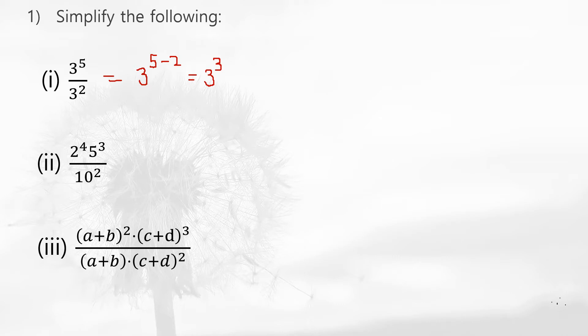3 to the power 3 means 3 times 3 times 3. That is 3×3=9, and 9×3=27. So 27 is your answer.